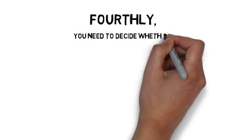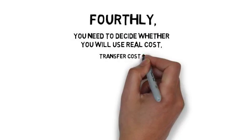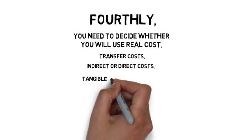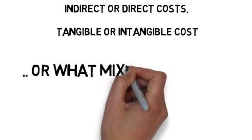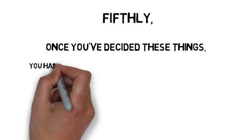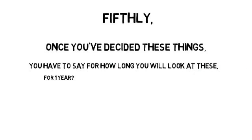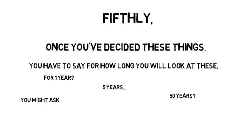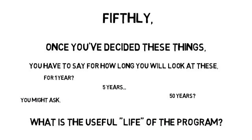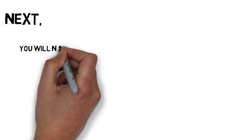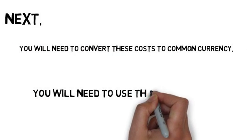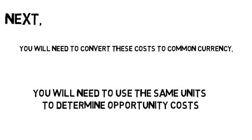Fourthly, you need to decide whether you will use real cost, transfer costs, indirect or direct costs, tangible or intangible costs, or some mixture of these. Fifthly, once you've decided these things, you have to say for how long you will look at these — one year, five years, 50 years — you might ask what is the useful life of the program. Next, you will need to convert these costs to common currency and use the same units to determine opportunity costs.